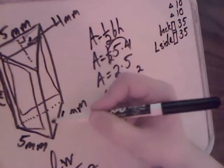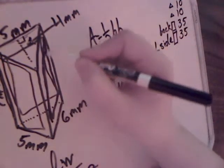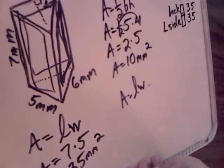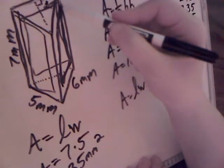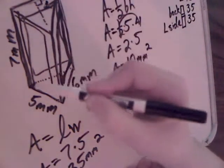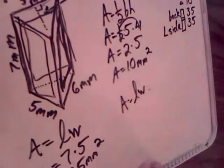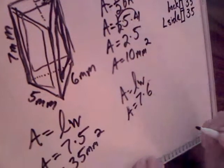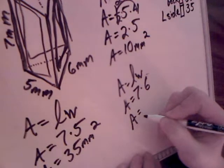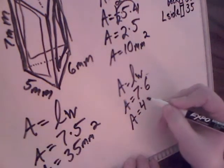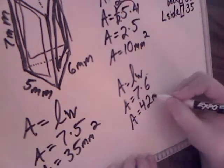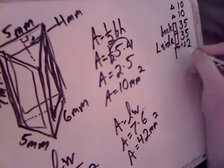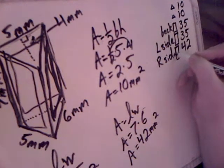Now we only have one more rectangle. To find the area of this rectangle, we remember that it's length times width. The length is 7 because all of these edges measure the same. The width is 6. So I need to multiply 7 times 6, and when I multiply 7 times 6 I get 42 millimeters squared. I'll put the 42 up here — this is the right side rectangle.